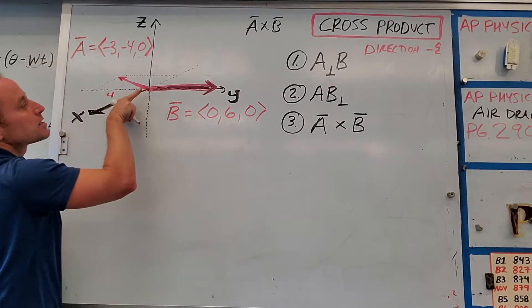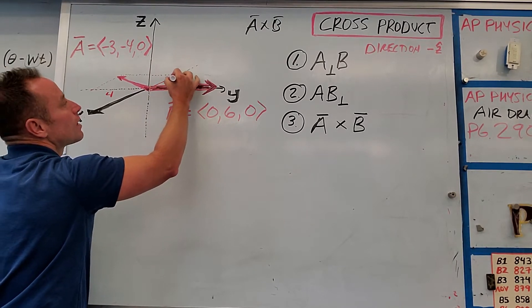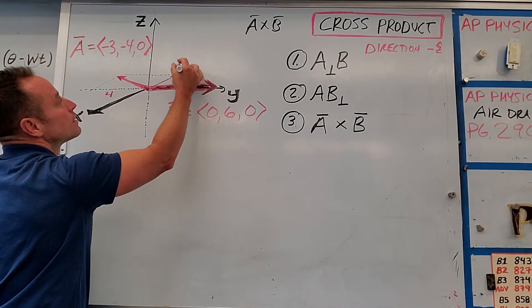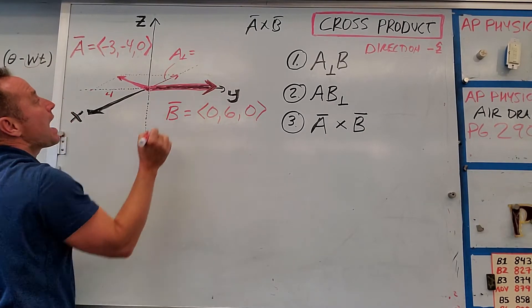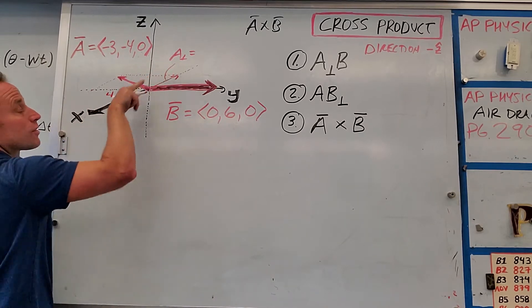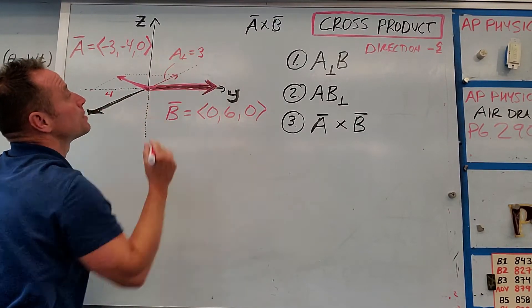The component of A that's perpendicular to B, which points back this way, so this is what I would call A perp. So this little dude is called A perp, and that is three units long, because it goes three units in the negative X direction. So A perp is three.